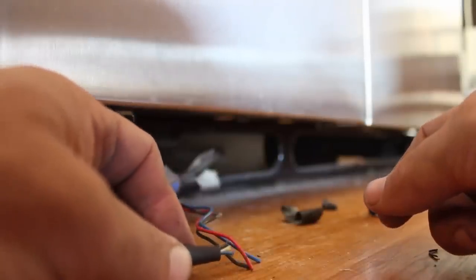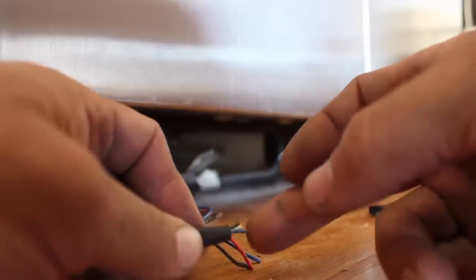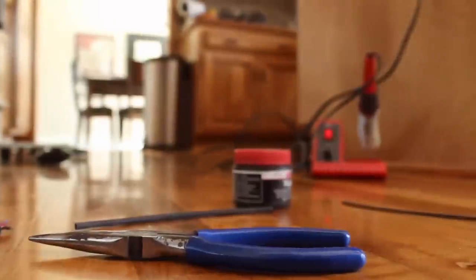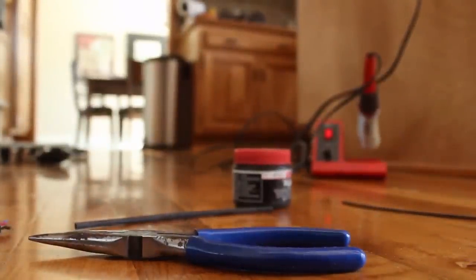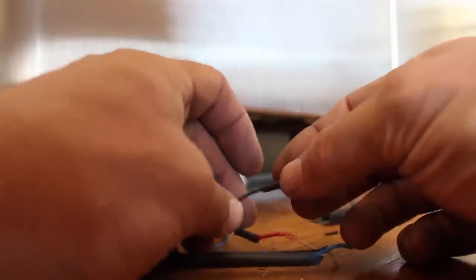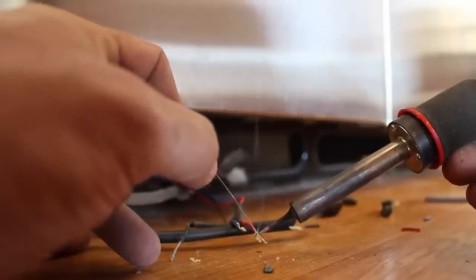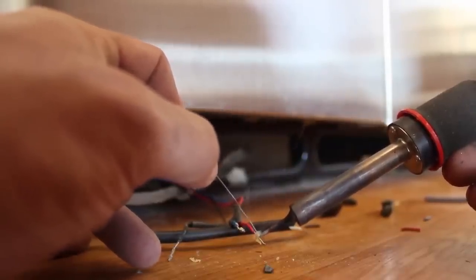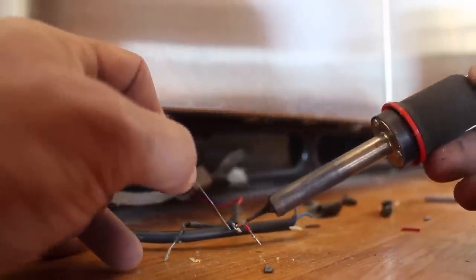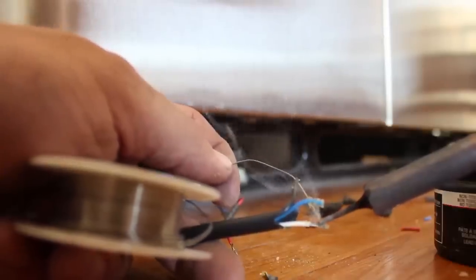We've got two blacks, two blues, a white and a red. And the white and red go together. The black goes to black, the blues goes to blue. So we'll strip these, and I've got the soldering iron over there ready to go. So we'll solder these up. The white and red go together.